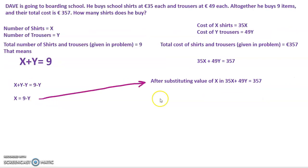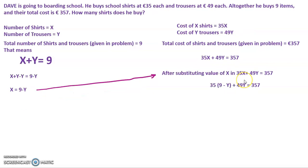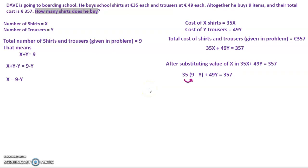Now I substitute the value of x, that is 9 minus y, into the second equation. Instead of 35x, I write 35 into (9 minus y) plus 49y equals 357. Simplifying: 35 into 9 is 315, and 35 into minus y is minus 35y, so we have 315 minus 35y plus 49y equals 357.